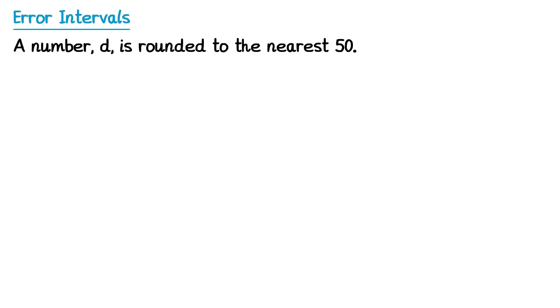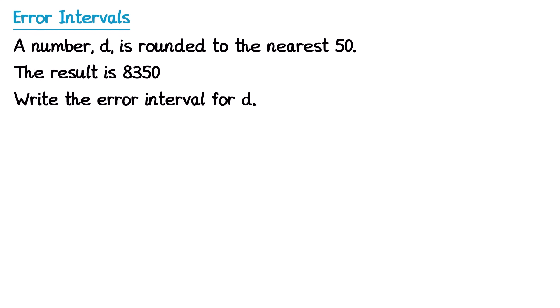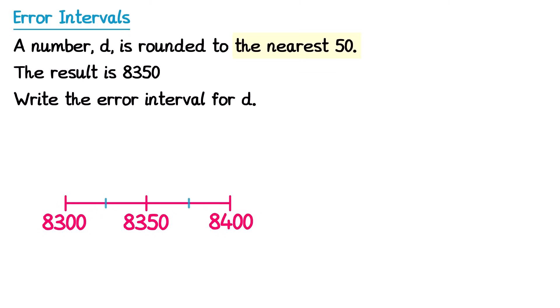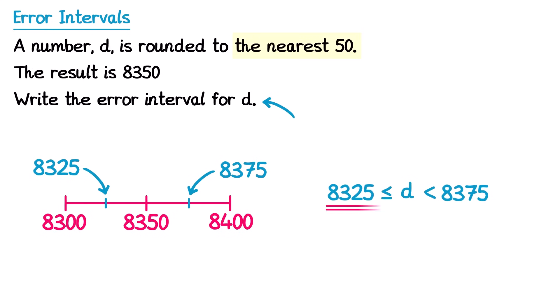For this question we've got a number that's been rounded to the nearest 50, and the result is 8,350, and we need to write the error interval for D. So we draw a number line, place 8,350 in the middle, then we need a number immediately below rounded to the nearest 50 — we just take off 50, so 8,300 — and we add 50 for the one above, so 8,400. Then we find the numbers halfway in between: 8,325 and 8,375. We write D, the inequality symbols, and then place the lower bound and the upper bound to form the error interval.